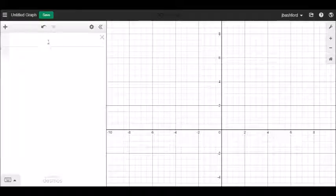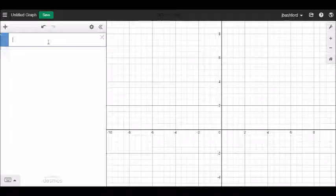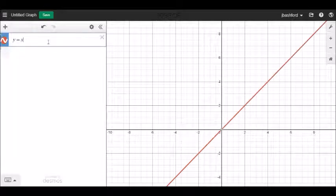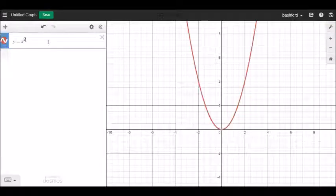So an example of a graph that you might have met before is y equals x squared so you always type the functions into the left hand side. To get squared you just hold shift down and press the six button with that little arrow up there and that allows you to put a power up there.